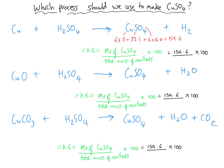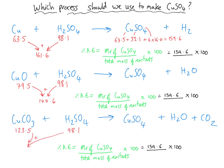The mass of copper sulfate — 159.6 — is the same for all three calculations. The total mass of reactants varies each time. The MR of copper and sulfuric acid adds together to make 161.6. The MR of copper oxide and sulfuric acid adds together to make 177.6. And the MR of copper carbonate and sulfuric acid adds together to make 221.6. In each case, those total masses of the reactants go on the bottom of our calculation, and when we crunch the numbers, here are the percentages we get.